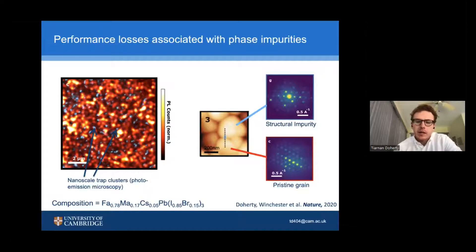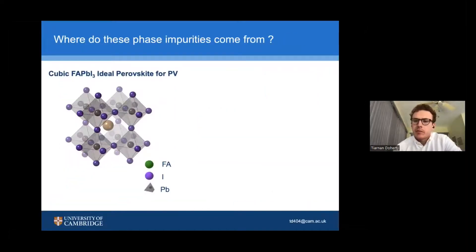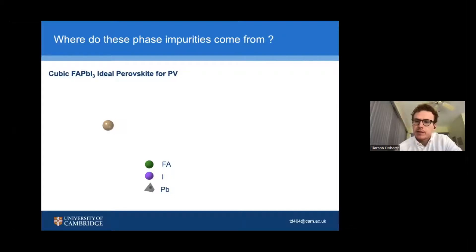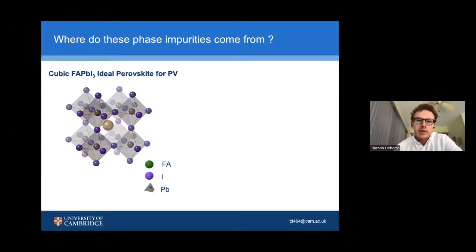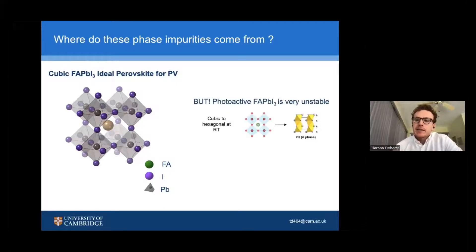The question immediately raised was: where do these hexagonal phase impurities come from in this state-of-the-art perovskite composition? We decided we had to go back and look at the structures this complex perovskite was based on — a much simpler perovskite, formamidinium lead iodide, or FAPI. FAPI is a simple cubic perovskite structure: formamidinium in the A site, lead in the B site, and iodide surrounding the lead in octahedral cages. FAPI is really an ideal perovskite for photovoltaics — it has a nice band gap and is very thermally stable — but it has a critical flaw: it's thermodynamically unstable at room temperature and quickly transitions from the cubic perovskite structure into an undesirable photo-inactive hexagonal perovskite. This is the exact same hexagonal perovskite that contributes to performance losses in state-of-the-art compositions.